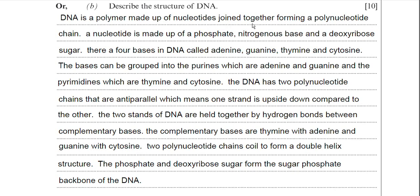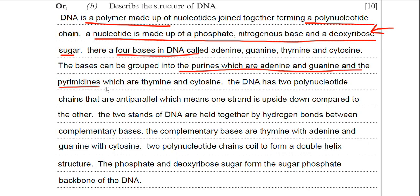I've mentioned DNA being a polymer and nucleotides forming a polynucleotide chain. I've mentioned what the nucleotide is made up of. Make note that I've said deoxyribose sugar. You have to mention that. I've talked about the four bases. I've named them. I've also mentioned that they can be purines and pyrimidines.